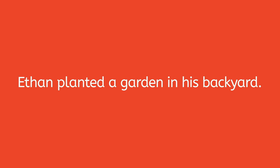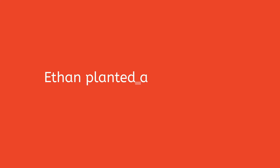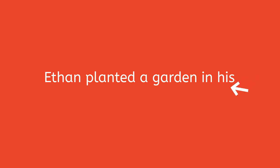Now we can write this as a sentence: Ethan planted a garden in his backyard. Remember, when we write a sentence we need to begin with a capital letter and then leave a space after each word. Ethan planted a garden in his — now there's something extra to notice here. I ran out of room and couldn't finish my sentence, but that's okay. All I have to do is go down to the next line, all the way back to the beginning, and I can keep writing. Backyard. Now that my sentence is finished, I add a period to the end.